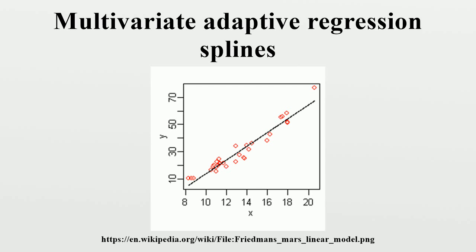Hinge functions are a key part of MARS models. A hinge function takes the form max(0, x − knot) or max(0, knot − x), where the knot is a constant. The figure on the right shows a mirrored pair of hinge functions with a knot at 3.1. A hinge function is zero for part of its range, so it can be used to partition the data into disjoint regions, each of which can be treated independently. Thus, a mirrored pair of hinge functions creates the piecewise linear graph shown for the simple MARS model. Hinge functions can also be multiplied together to form non-linear functions. Hinge functions are also called hockey stick or rectifier functions, and are often represented using the notation for taking the positive part.